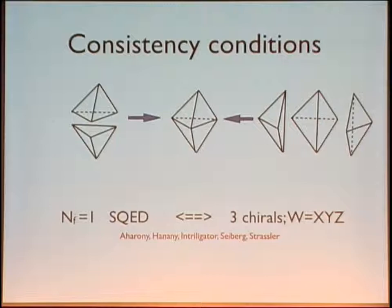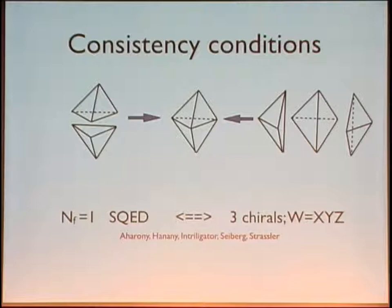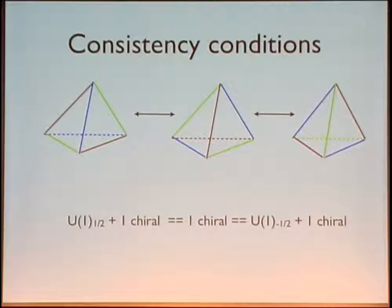On the other side, we get three tetrahedra glued together, giving three chiral multiplets. The gluing along the internal edge forces you to add a superpotential, so you get the so-called XYZ model: three chiral multiplets with a superpotential W=XYZ. This is basically the canonical example of an N=2 mirror symmetry — derived by Aharony, Intriligator, Seiberg, and Strassler starting from N=4 mirror symmetry. The two theories are the same in the infrared, and by extension, all theories made out of tetrahedra which give the same geometry — the same three-manifold — are mirror.